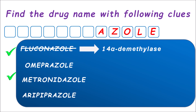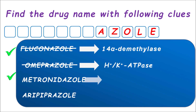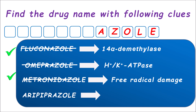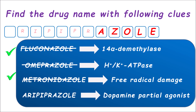Metronidazole and tinidazole produce free radical damage on the DNA of the parasite, acting as anti-protozoal agents — not acting on dopamine receptors. Finally, aripiprazole is an atypical antipsychotic classified as a dopamine receptor partial agonist. That means aripiprazole can act as both agonist and antagonist — it acts as an antagonist to reduce motor symptoms. Therefore, aripiprazole is the right answer for this puzzle.